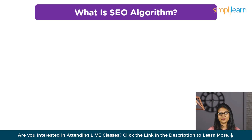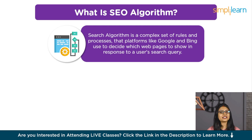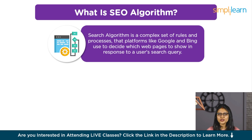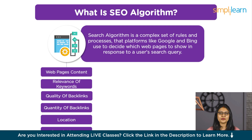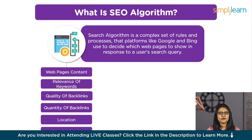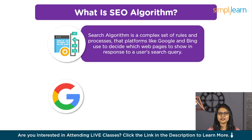Let's take a quick look at what is a search algorithm. A search algorithm is essentially the brain behind search engines like Google, Bing, and others. It's a complex set of rules and processes that these platforms use to decide which web pages to show in response to the user's search queries. These algorithms consider various factors including the content of web pages, the relevance of keywords, the quality and quantity of backlinks, and even the user's location and search history.